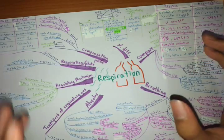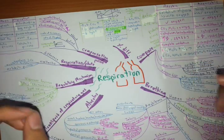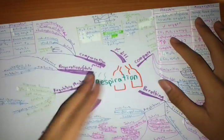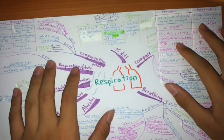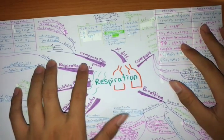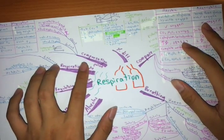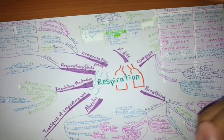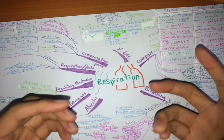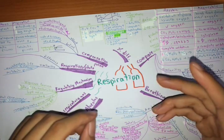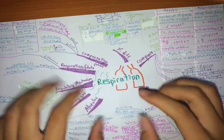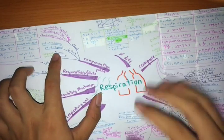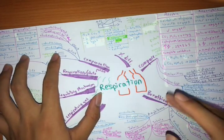Let's talk about compensation point. It's kind of like the last part of our SPM syllabus, chapter 7, form 4. Compensation point is when the carbon dioxide production during respiration is equal to the carbon dioxide consumption during photosynthesis.